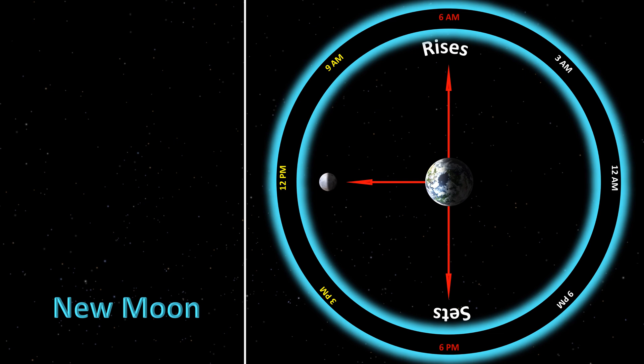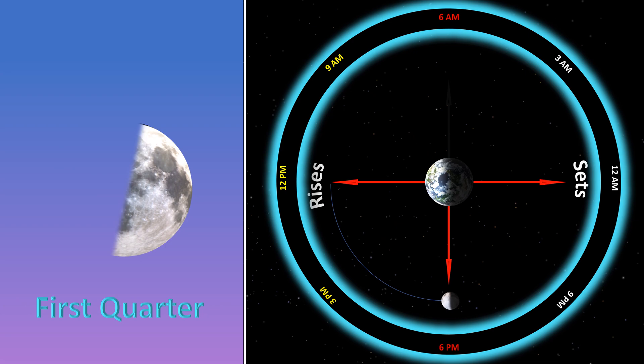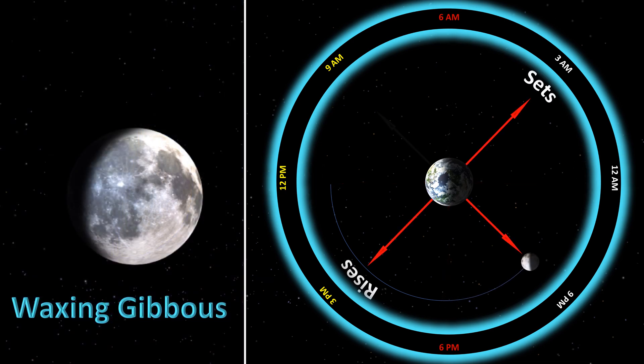On new moon, the near side of the moon is in total darkness, so we do not see the moon in the daytime and it is absent at night. The sun and moon rise and set approximately together. The waxing crescent moon rises before noon, transits the meridian before sunset, and sets before midnight. The first quarter moon occurs when the western half of the moon is illuminated and the sun, moon, and earth are at a right angle. On that day, the moon rises at noon, transits the meridian at sunset, and sets at midnight. The waxing gibbous moon rises in the afternoon, transits the meridian after sunset, and sets after midnight.